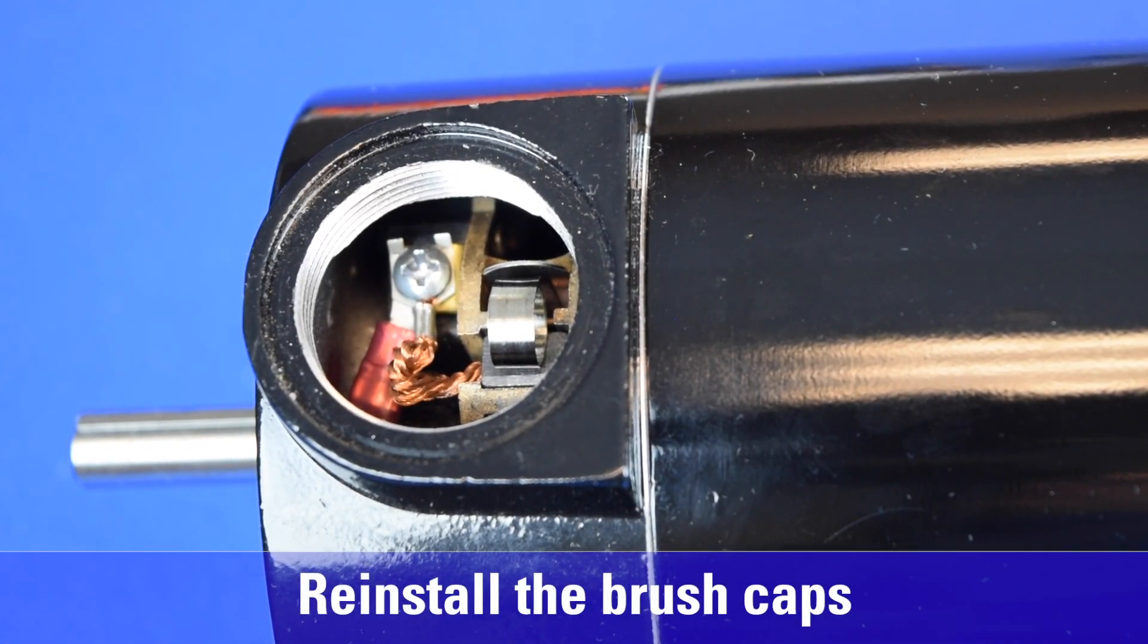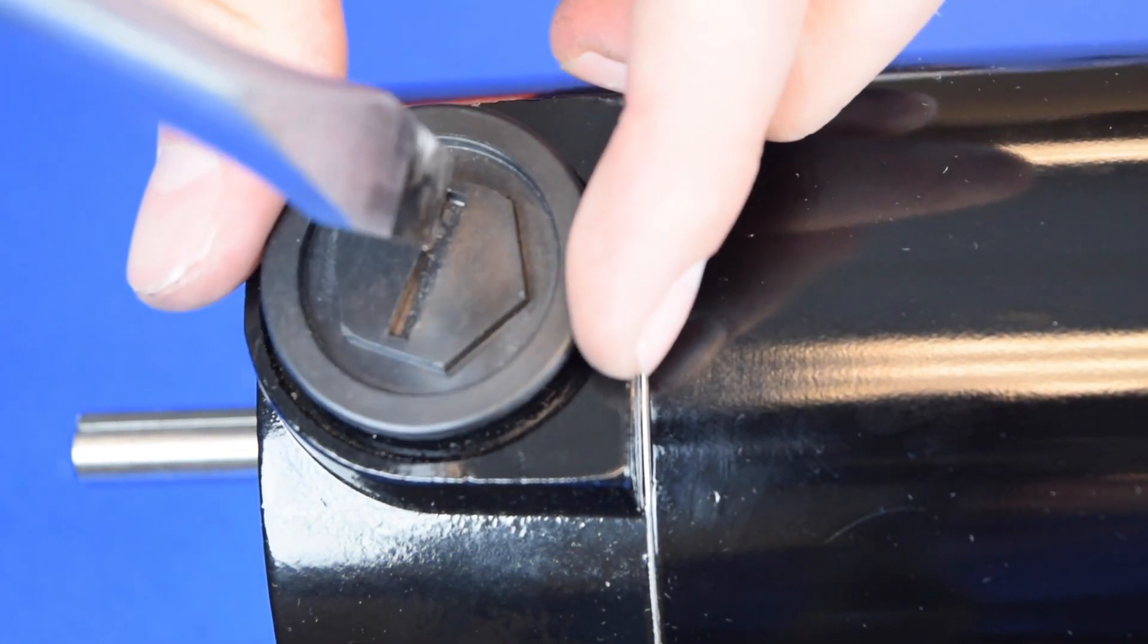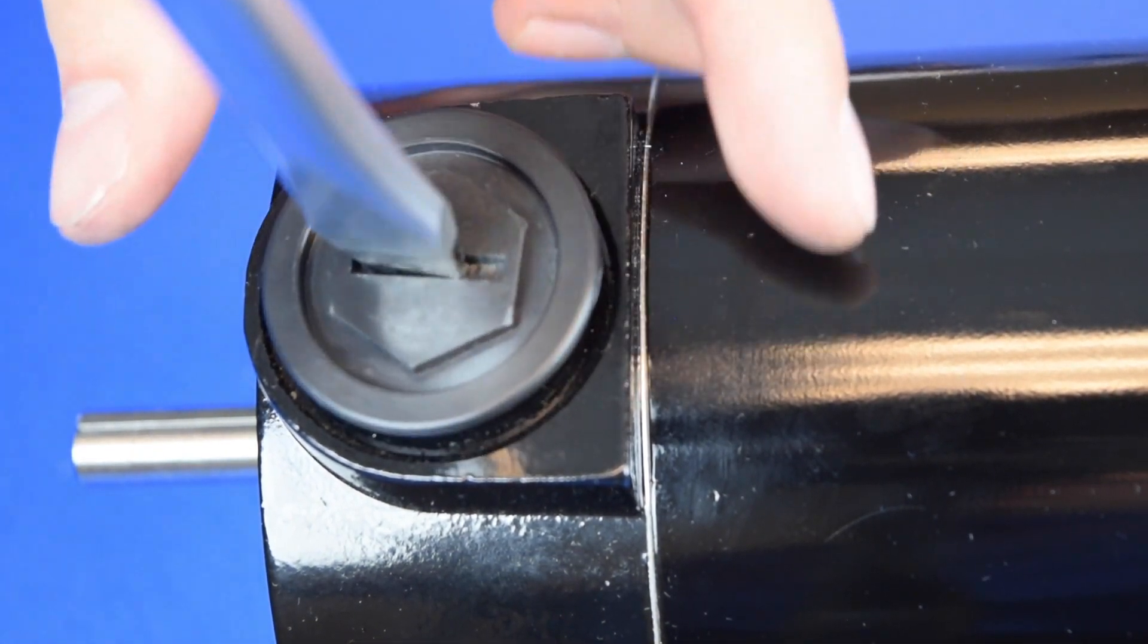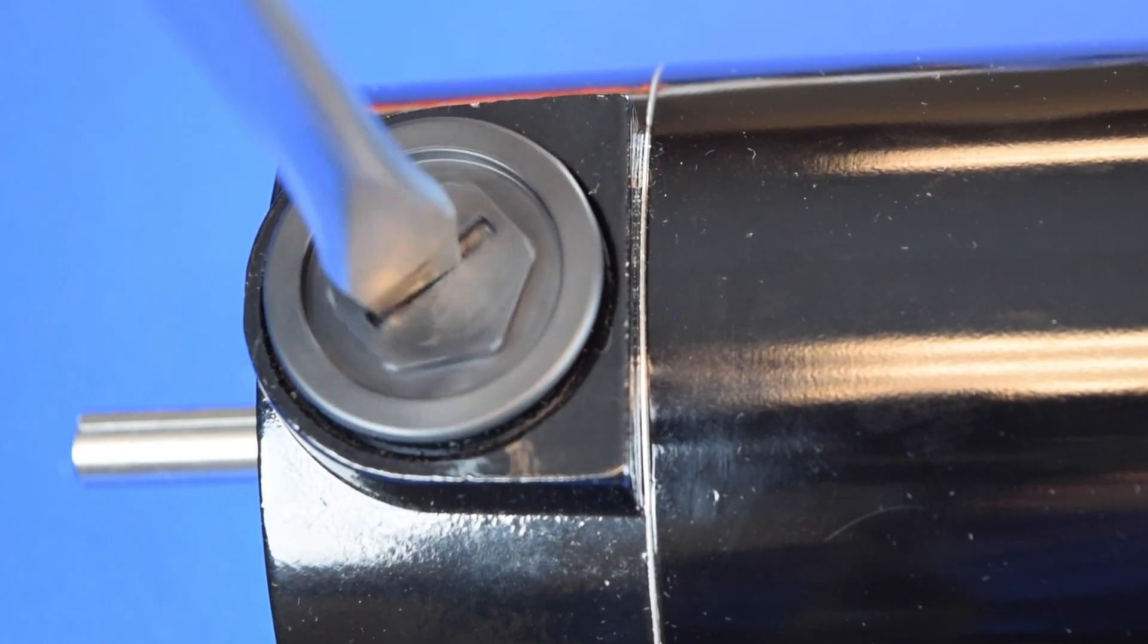With the brushes and springs in place, we can now reinstall the brush caps into the end shield using a large screwdriver or a 3/4 inch hex socket.